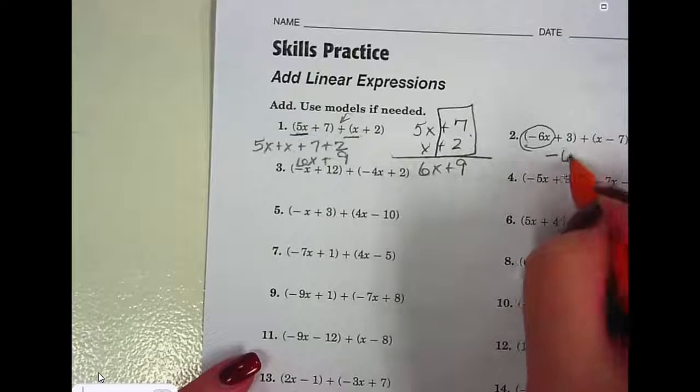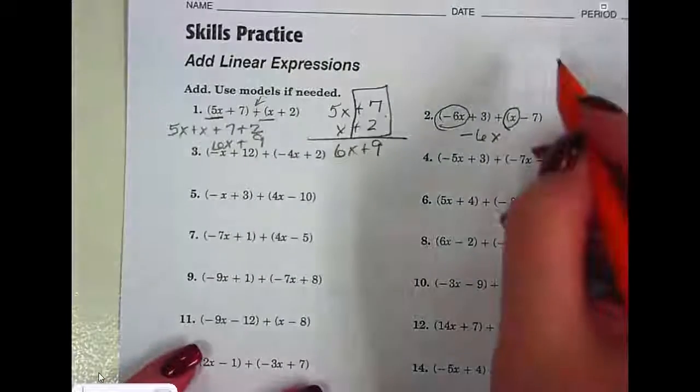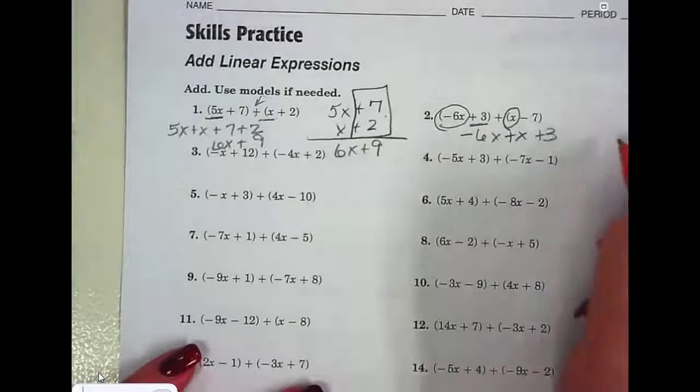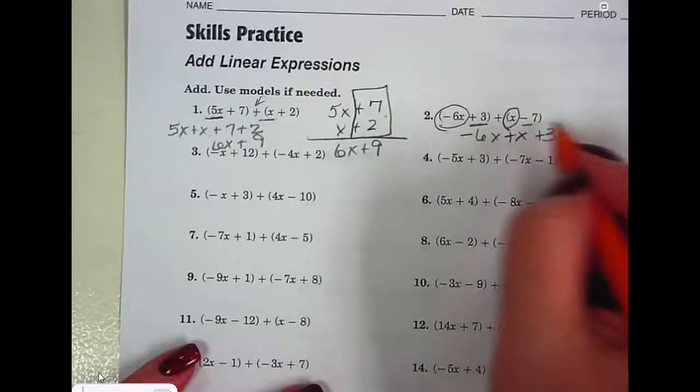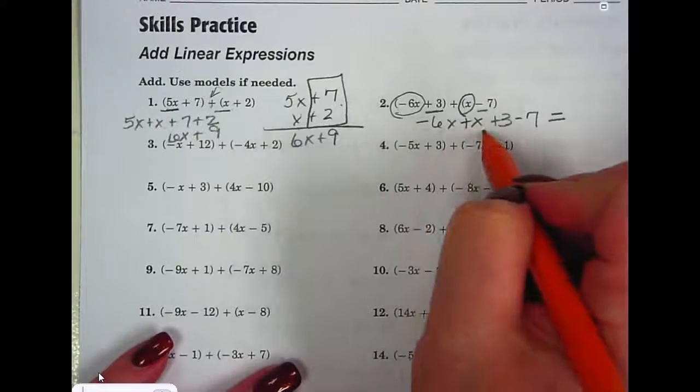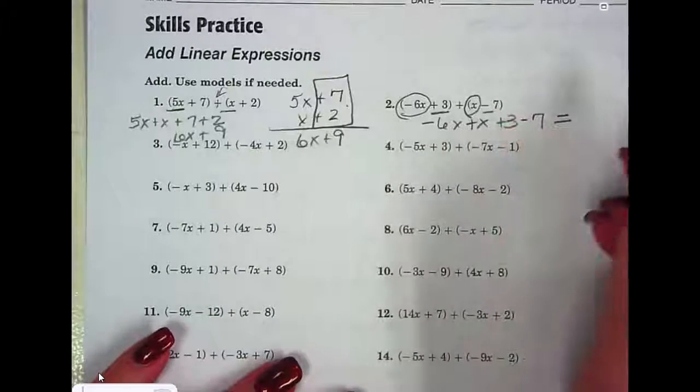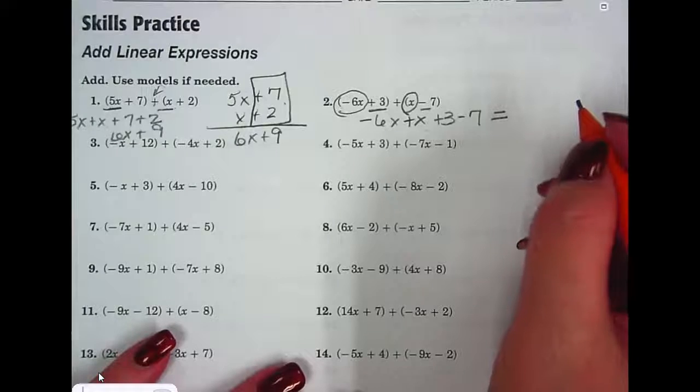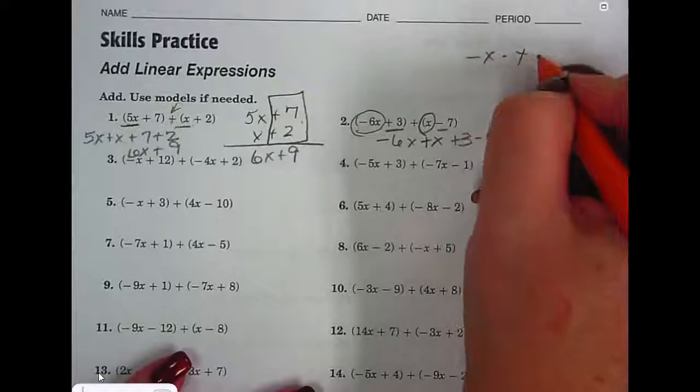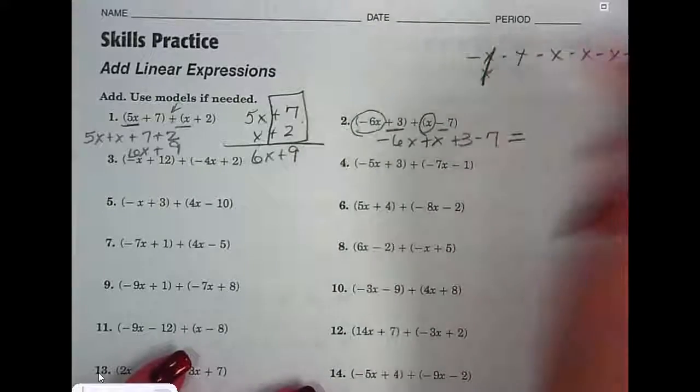So negative 6x. And is this a positive x or a negative x? Positive. So plus an x, and then plus 3, and then minus 7. Now I've got to think. I have 6 negative x's and a positive x. So if you're at negative 6 and you move 1 in the positive direction, where are you at? Or 6 negatives and 1 positive. Cross off zero pairs. What do you have left? 5 negatives.